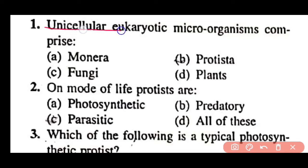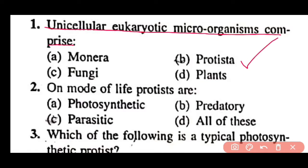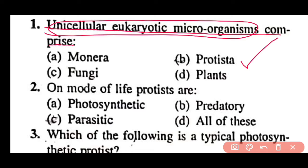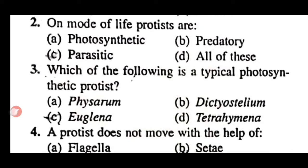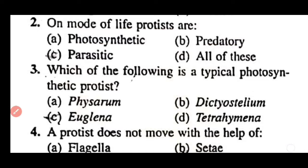Question 1: Unicellular eukaryotic microorganisms comprise which kingdom — Monera, Protista, Fungi, or Plants? Correct answer is option B. Kingdom Protista consists of unicellular eukaryotic microorganisms. Question 2: On the basis of mode of life, protests are photosynthetic, predatory, parasitic, or all of these? Correct answer is option D. Protests are photosynthetic, parasitic, as well as predatory in nature.